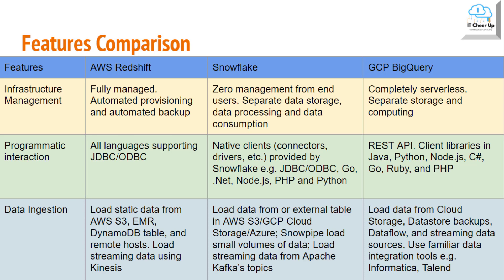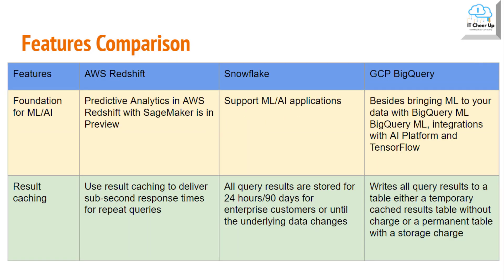On data ingestion, you can load static data from AWS S3, EMR, DynamoDB tables, and remote hosts to AWS Redshift, and streaming data using AWS Kinesis. For GCP BigQuery, you can load data from Cloud Storage, Cloud Datastore backups, Cloud Dataflow, and streaming data sources, and use familiar data integration tools like Informatica, Talend, and others. In Snowflake, you can load data from external tables in AWS S3, GCP Cloud Storage, and Microsoft Azure Storage. You can use Snowpipe to load small volumes of data, and load streaming data from Apache Kafka topics.